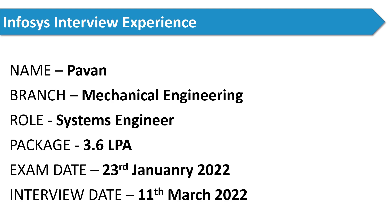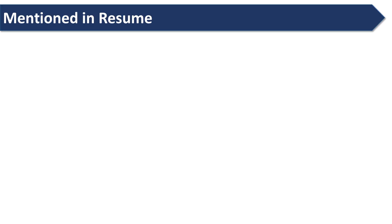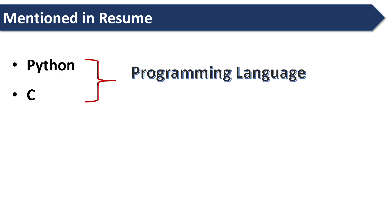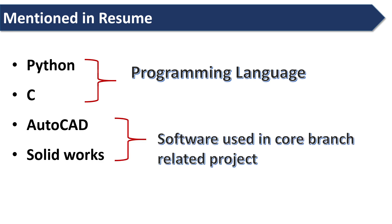Now let's see what are the things he mentioned in his resume. He mentioned Python and C, which are programming languages. He also mentioned AutoCAD and SolidWorks, which are the software he used in his branch-related project. Now let's see what questions the interviewer asked him.